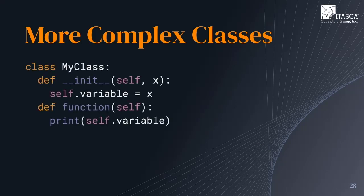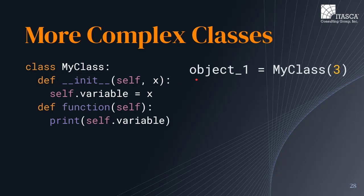Now it's also possible to create more complex classes by passing in parameters to the objects. In a prior example the class variable was simply set equal to 10. However, it's possible when initializing an object to pass in an argument and then to either set some initial state of the object according to that argument or to do some additional computations. In this example, we simply set self.variable to be equal to the passed argument. So now when we create an object of my class, we have to pass in some argument within the parentheses — in this example, we pass in three. So when the init function is called, the object reference self is passed in as well as the argument three, and as a result the object's variable is set to three.